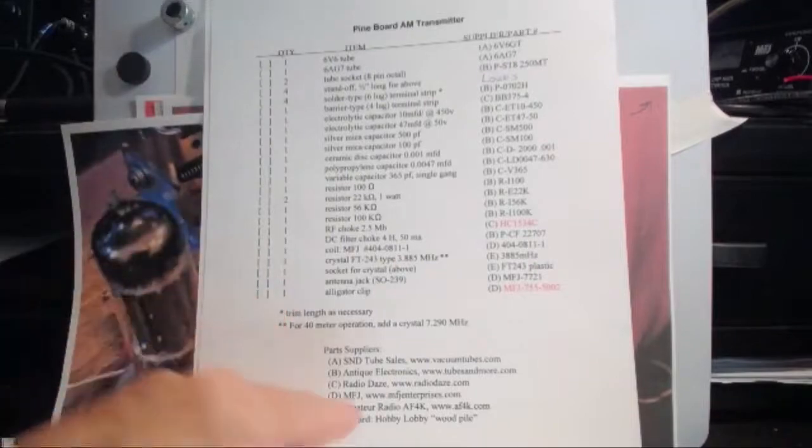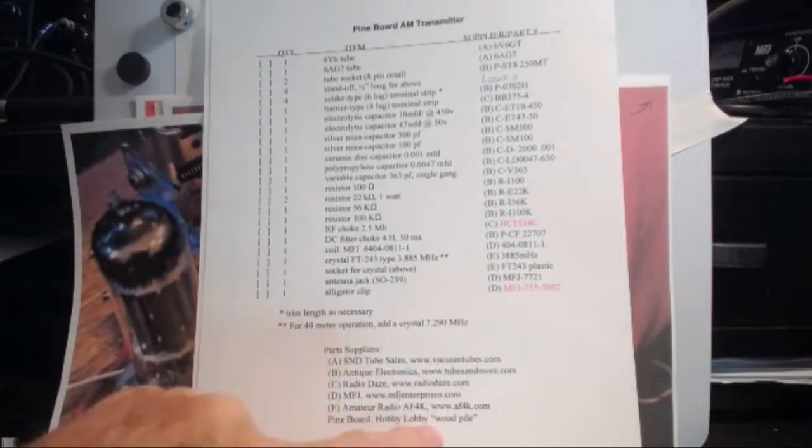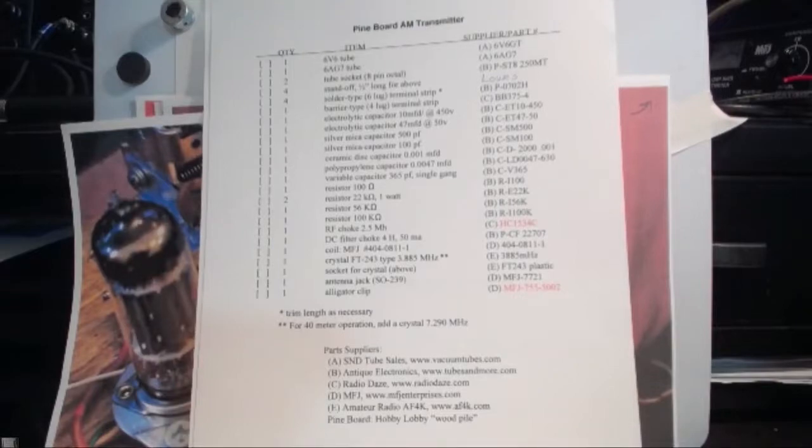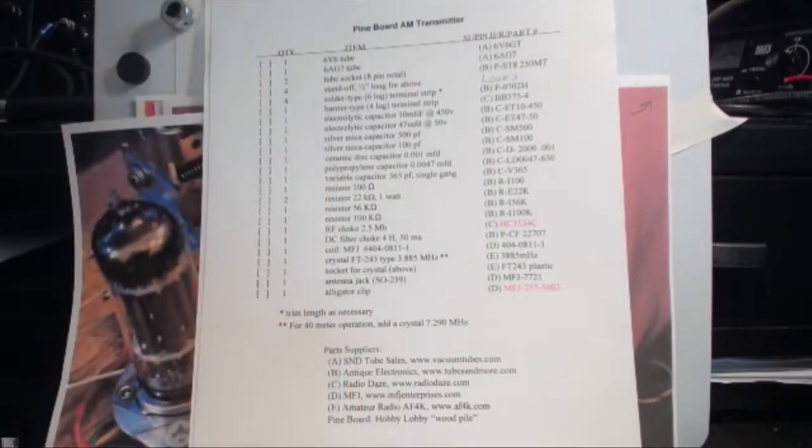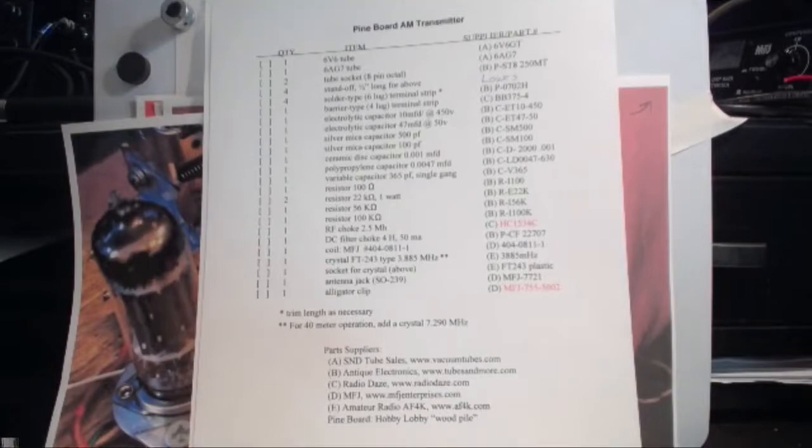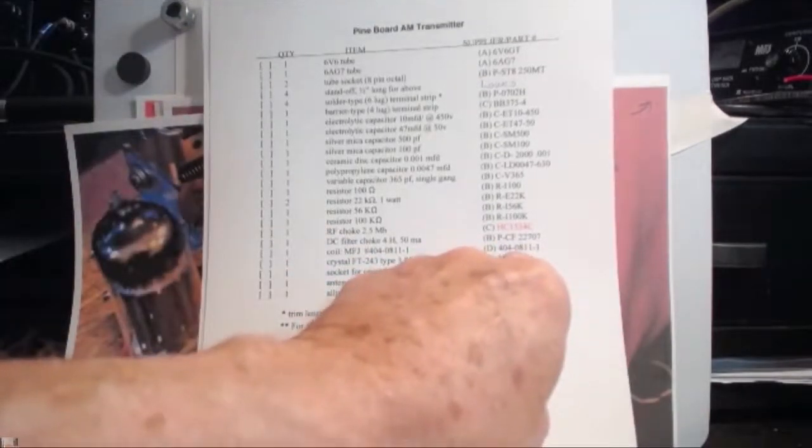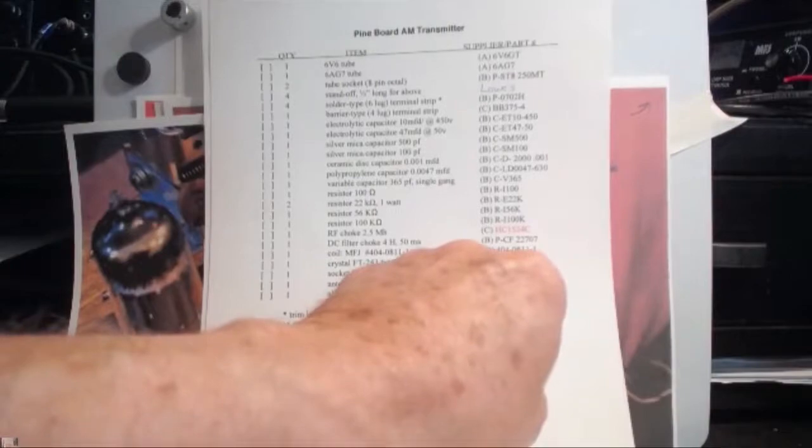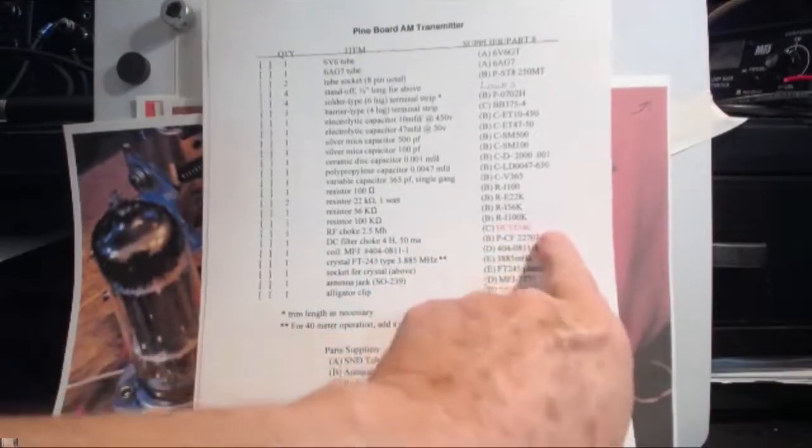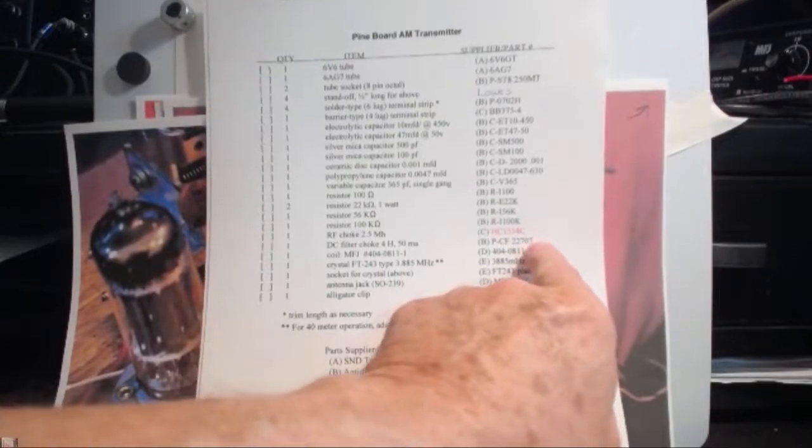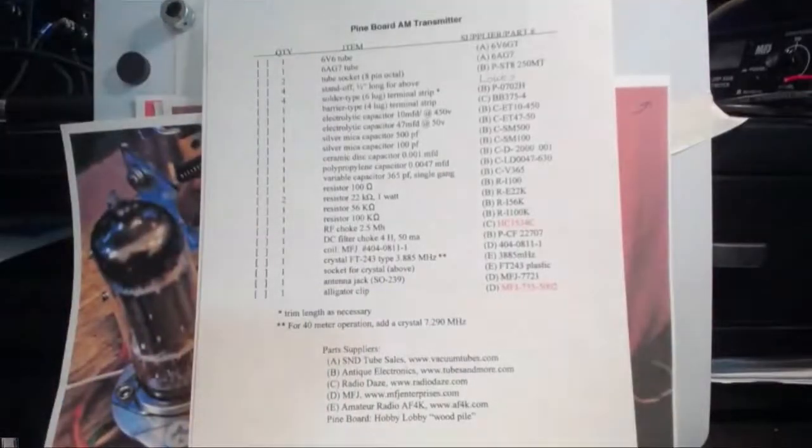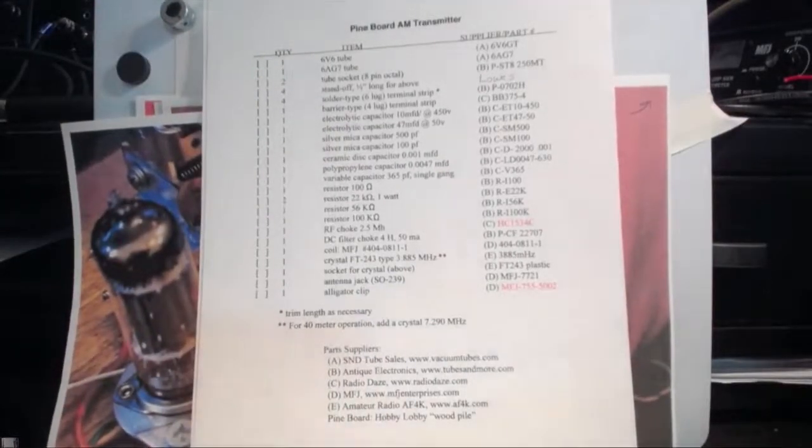MFJ is doing the final coil. We talked about that last week. They're doing a very special coil for us. You have to go to their website or call them on the phone. Pick up the phone. There's a special number that they've applied to it, 404-0811. Now 0811 is for their amplifier, the 811 amplifier, but you put a dash one on it and it's the one just for the pine board project.